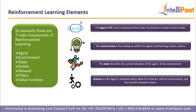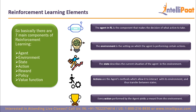An action is the agent's method of interacting with its environment and transferring between states. For example, a footballer kicking the ball in a particular direction at a certain speed is an action. After taking an action, the agent transfers from one state to another — for instance, a robot putting its right leg forward is an action that results in a new state. The environment then gives either a positive or negative reward based on the action taken.